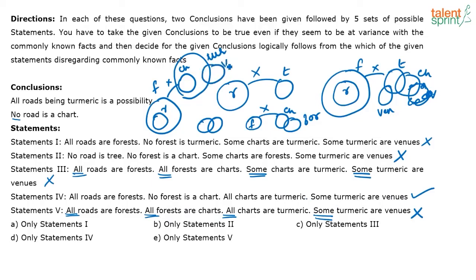Drawing the Venn diagram for statement 4: all roads are forests, no forests are chart, all charts are turmeric, some turmeric are venues. First conclusion — all roads being turmeric is a possibility — is valid because roads can extend into turmeric without violating any given condition. Second conclusion — no road is chart — is definitely true because all roads are forests and no forest is chart. So both conclusions follow. As I said, if you eliminate options early, you may not even need to draw the Venn diagram to identify the right answer.